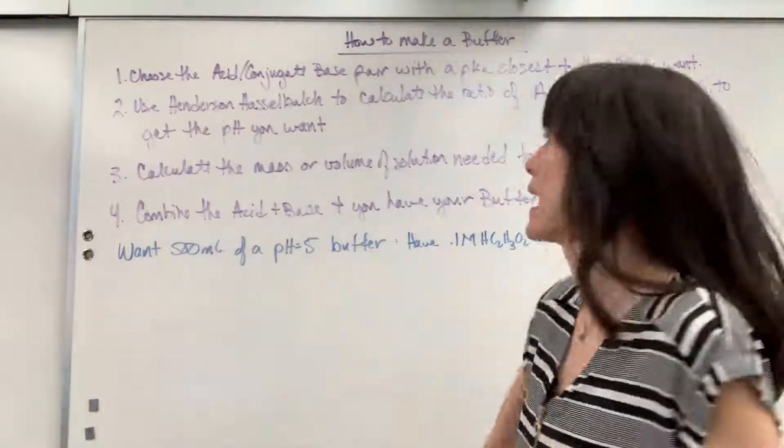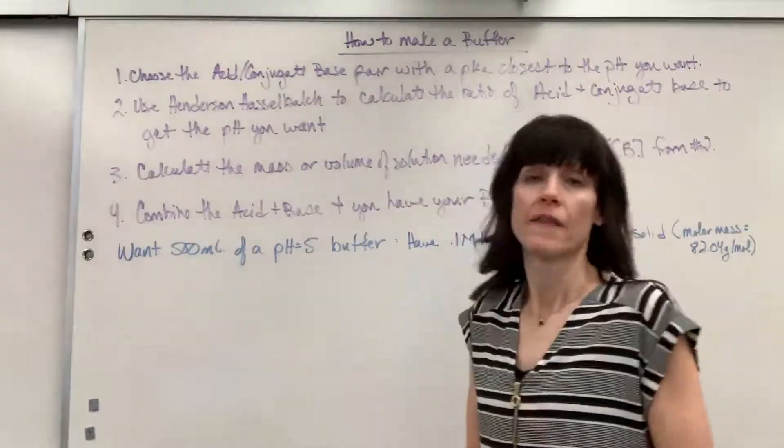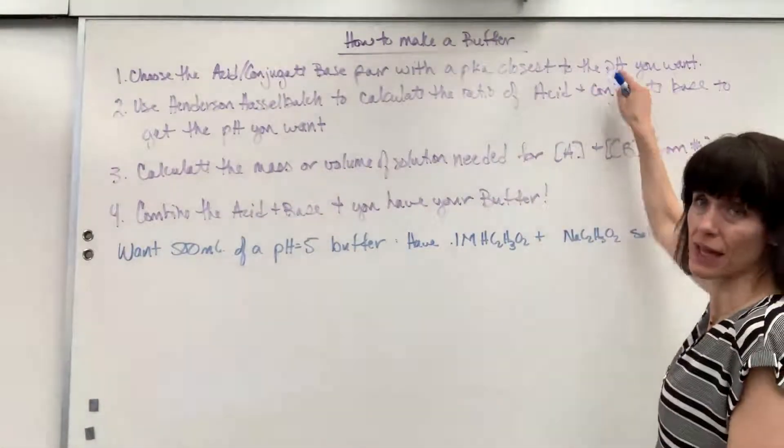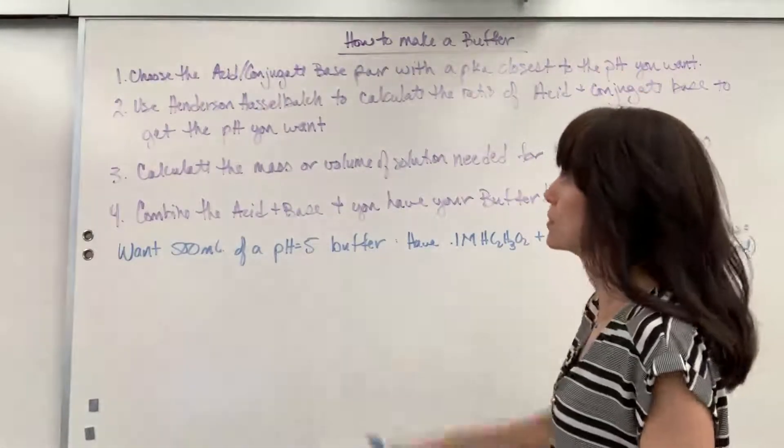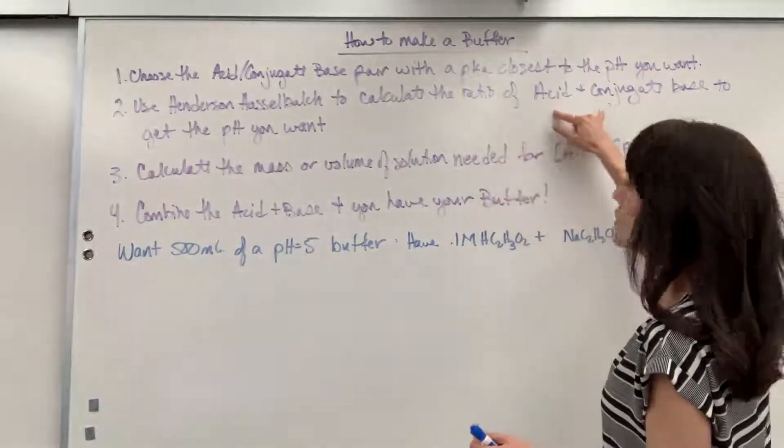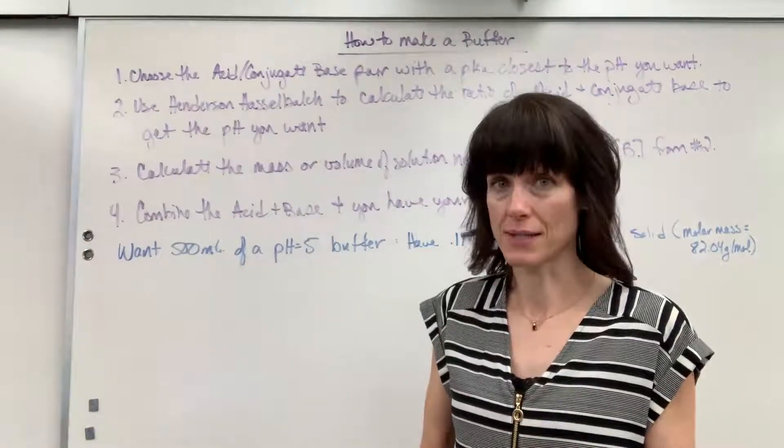First, I want you to choose the acid conjugate base pair that's pKa is closest to the pH that you want. Second, you're going to use Henderson-Hasselbalch, the calculation, to figure out the ratio of acid to conjugate base.